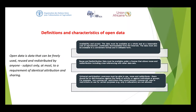Some of the characteristics of open data relate to availability and access. The data must be available as a whole and at a reasonable cost of reproduction, preferably downloadable from the internet. The data must also be available in a convenient and uneditable format. That is one characteristic of open data regarding availability and access.